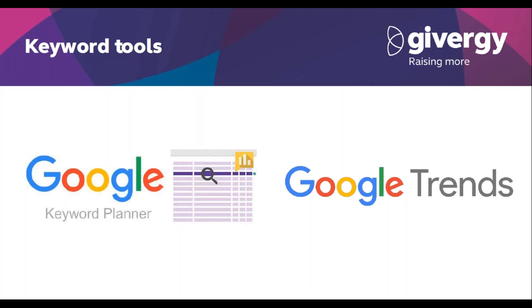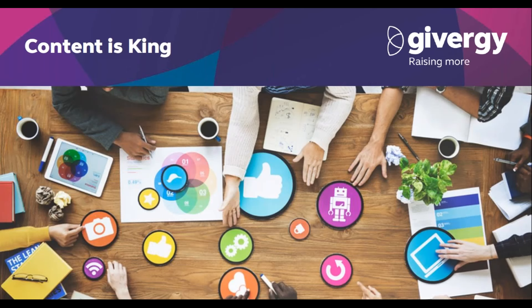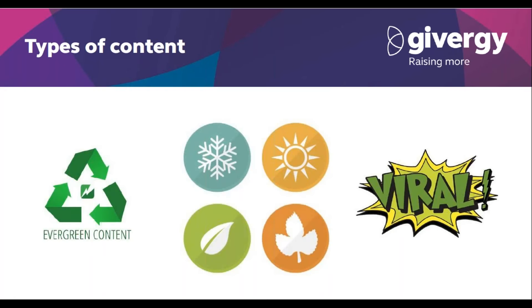It's just an example of how effective this tool can be. Next on the agenda is content. We all hear the phrase 'content is king', but why is it necessary? First we have to understand there are three types of content. We have evergreen, which is content that can be relevant all year round — for example, 'tips to plan your next fundraising event' would be something that I could read all year round.